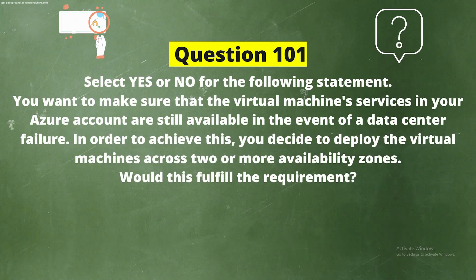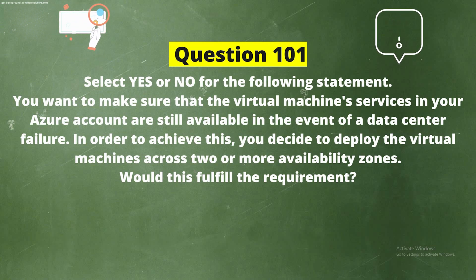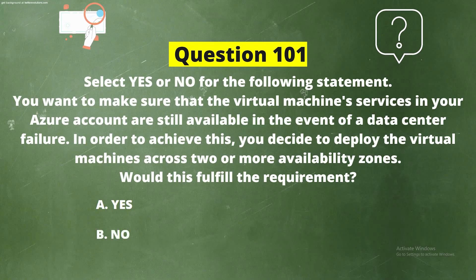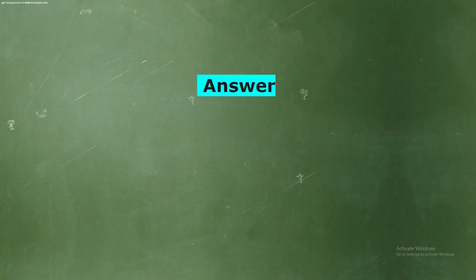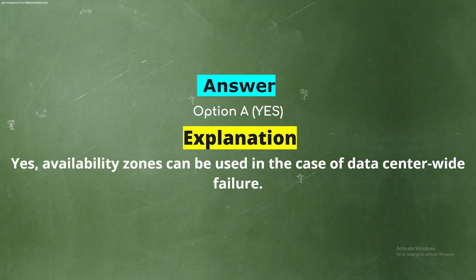Question 101. Select yes or no. You want to make sure that virtual machine services in your Azure account are still available in the event of a data center failure. You decide to deploy the virtual machines across two or more availability zones. Would this fulfill the requirement? The correct answer is Option A: Yes. Availability zones can be used to protect against data center-wide failure.